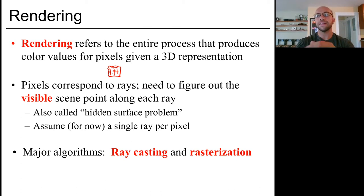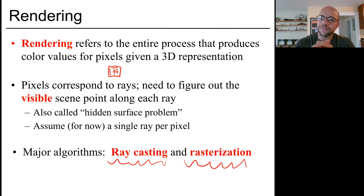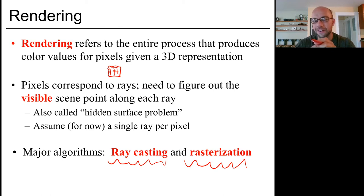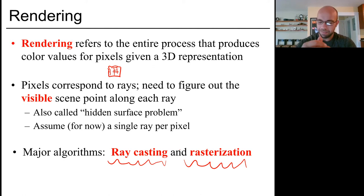There are two major algorithms for rendering: ray casting, which can be extended to ray tracing, and rasterization. Ray casting favors image quality over efficiency. Rasterization, at a high level, just flips the order of two for loops — and this is the algorithm typically built into your graphics card. The distinction is between super high-quality graphics using an arguably simpler algorithm versus rasterization, which is biased toward producing images quickly in a parallel fashion.